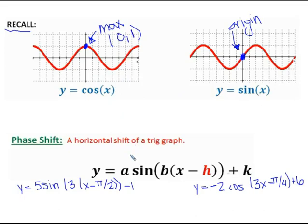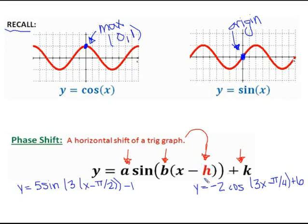In 10.1 we focused on amplitude, which was the a value. We focused on the period, which we can find from the b value. We also had examples that moved our graph up and down — that's what we're adding or subtracting on the end, the k value. A phase shift, however, is a horizontal shift of a trig graph — horizontal meaning left or right. The h value on the inside moves it left or right, and the k is moving it up or down.